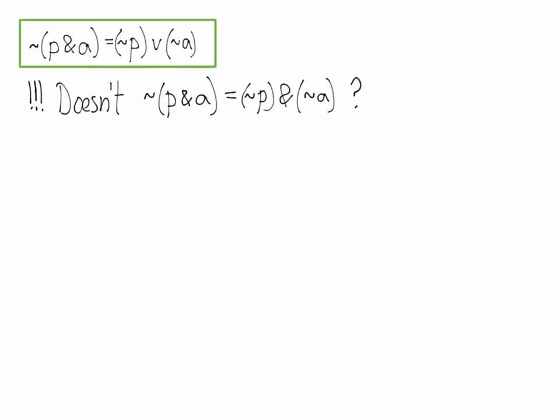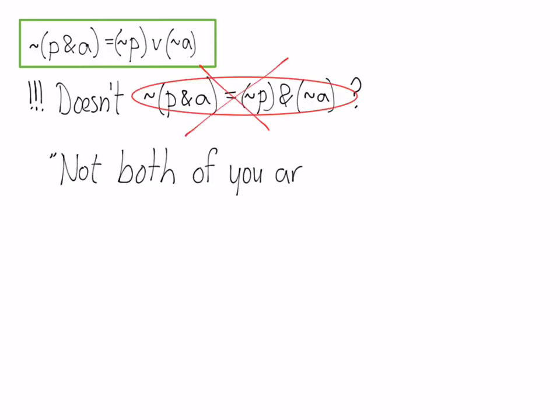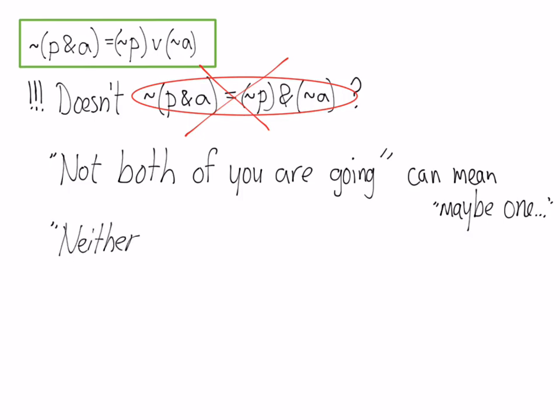Perhaps you're wondering: doesn't the negation of a conjunction equal the conjunction of the negations? In other words, can't you just multiply in the negation so that each of the inside variables becomes a negation? That doesn't work. Consider the sentence 'NOT both of you are going.' This can mean that maybe one of you are going. Next, consider the statement 'NEITHER of you are going.'